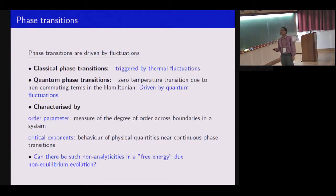Classical phase transitions are triggered by thermal fluctuations. Quantum phase transitions, not yet touched upon but similar to classical phase transitions, are driven by quantum fluctuations. Whenever we talk about a second-order phase transition, we talk about order parameter and critical exponents. The question is, can there be such non-analyticities in an effective free energy due to non-equilibrium evolution?